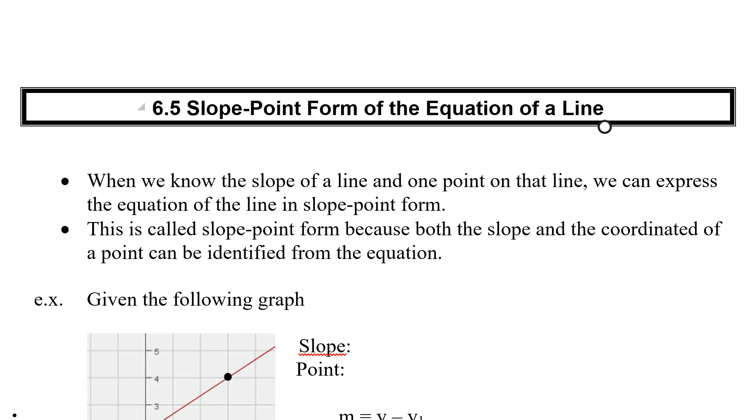Welcome back to our next lesson, 6.5. We've been looking at different forms of equations, so we looked at the slope-intercept form. Now we're going to look at our second one. This one is called the slope-point form of an equation.